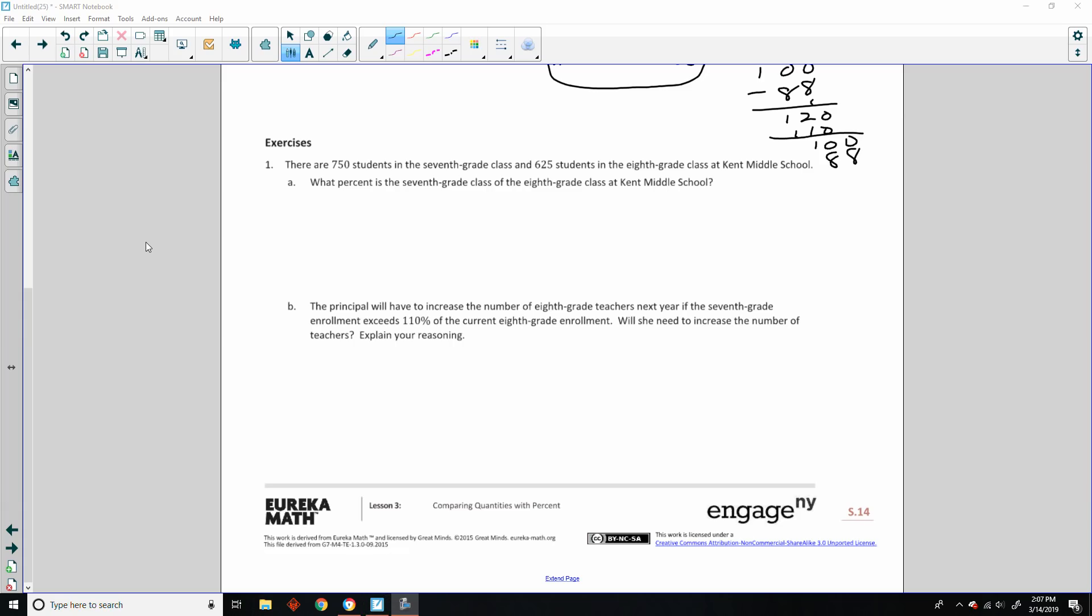Exercise one. Try these, pause the video, see how you did, and then come back and check your answers. There are 750 students in the 7th grade class total, 625 students in the 8th grade class total at Kent Middle School. What percent is the 7th grade class of the 8th grade class at Kent Middle School? So all they're saying is, what is 750 over 625? What percent is that?